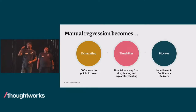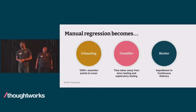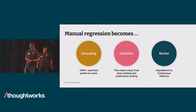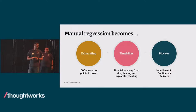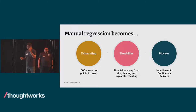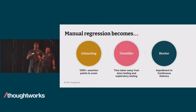Manual regression becomes very exhausting. Covering 1,000-plus assertion points takes a lot of time. It is a time killer because it takes the QA away from story testing and exploratory testing, and it's also a blocker to continuous delivery, which every organisation is looking forward to.